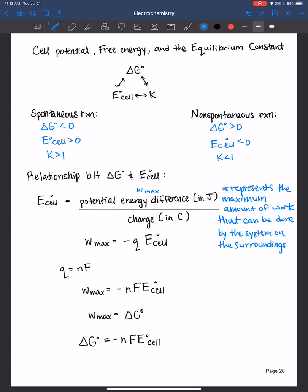And work max, if we rearrange this equation, we can rearrange this to be equal to negative Q times the cell potential. And the charge Q, I know you're used to seeing Q as heat energy, but in this context, it's charge, is equal to n times Faraday constant.